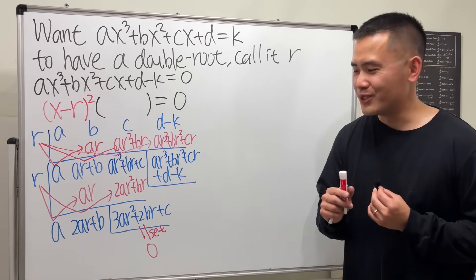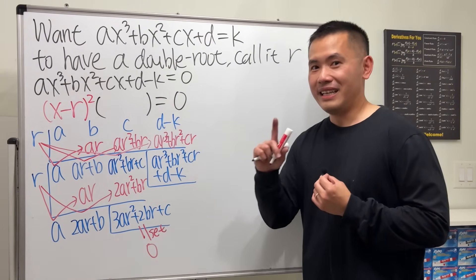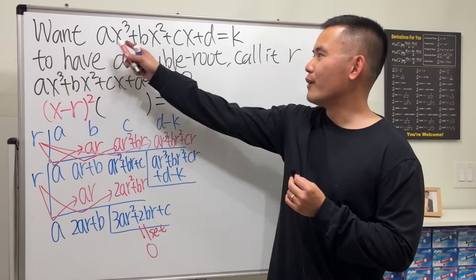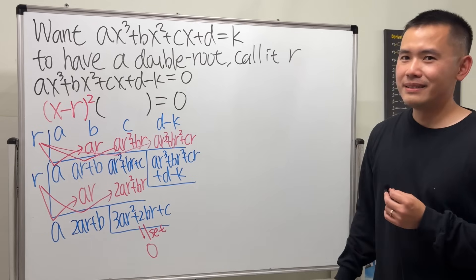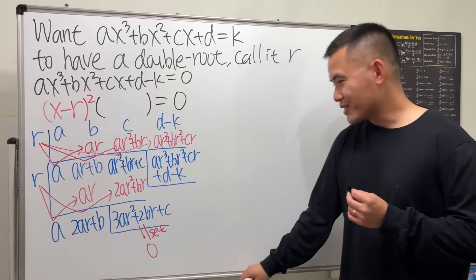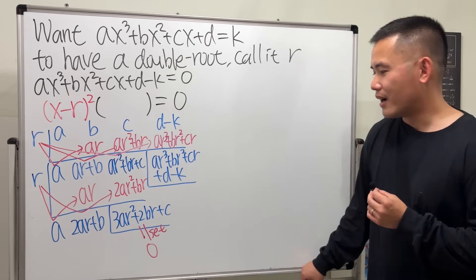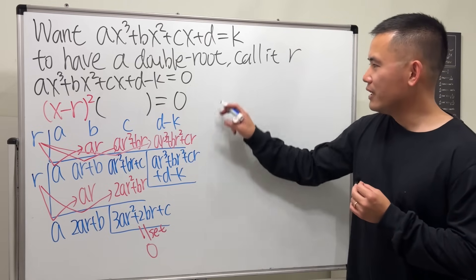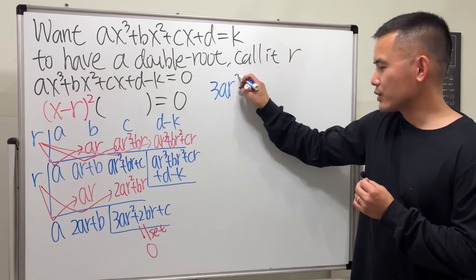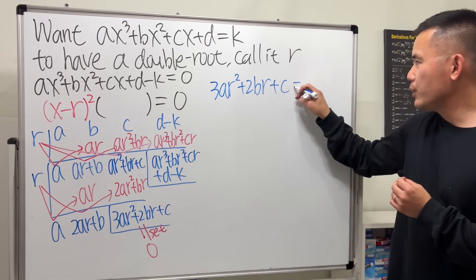Many of you have probably noticed what this is already — this is precisely the derivative of ax cubed plus bx squared plus cx plus d, evaluated at r. So let's set this equal to zero and figure out what r should be. We are looking at 3ar squared plus 2br plus c equals zero. It's a quadratic equation, so we can just use the quadratic formula.